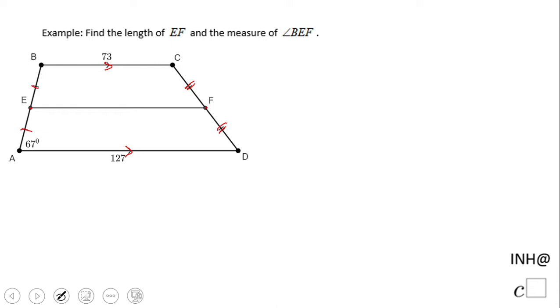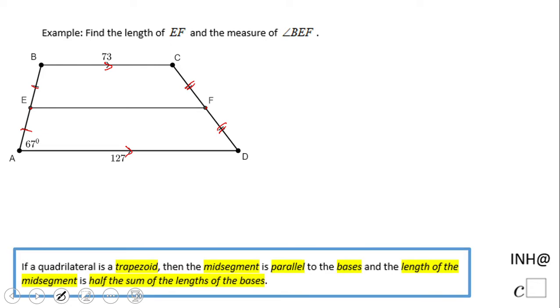So what is cool about a midsegment? A midsegment is parallel to the bases. So yes, EF, which is a midsegment, is parallel to BC, which is parallel to AD, because that is a trapezoid.